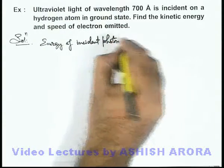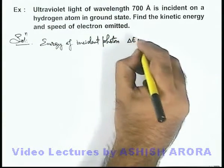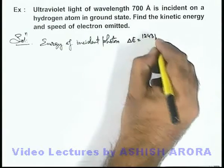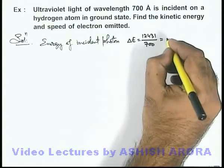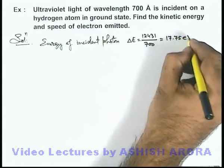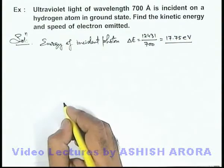In electron volts, this can be directly calculated as ΔE = 12431/700. On simplifying, the value we are getting is 17.75 electron volts. This is the energy of incident photon.